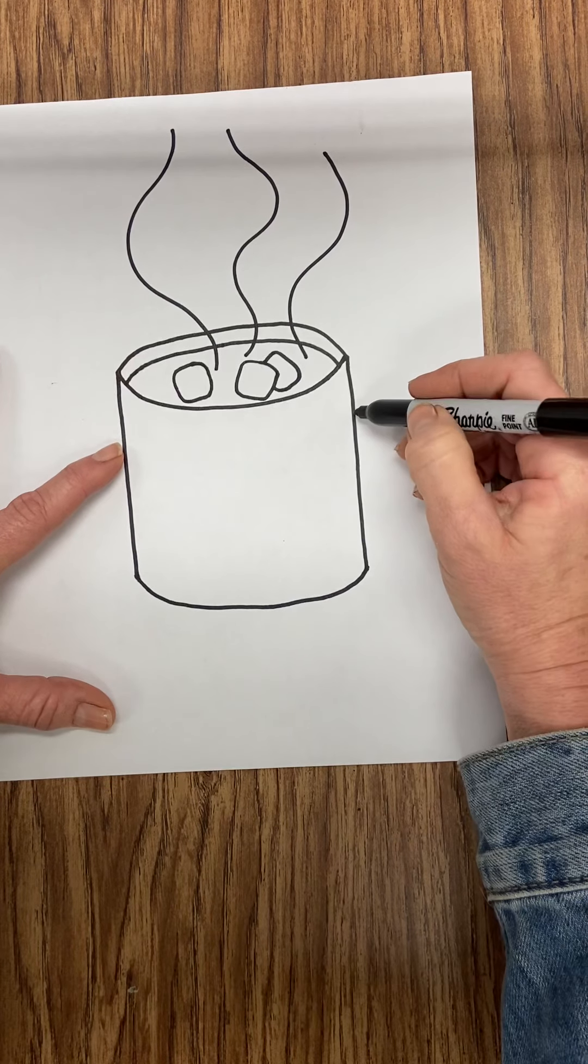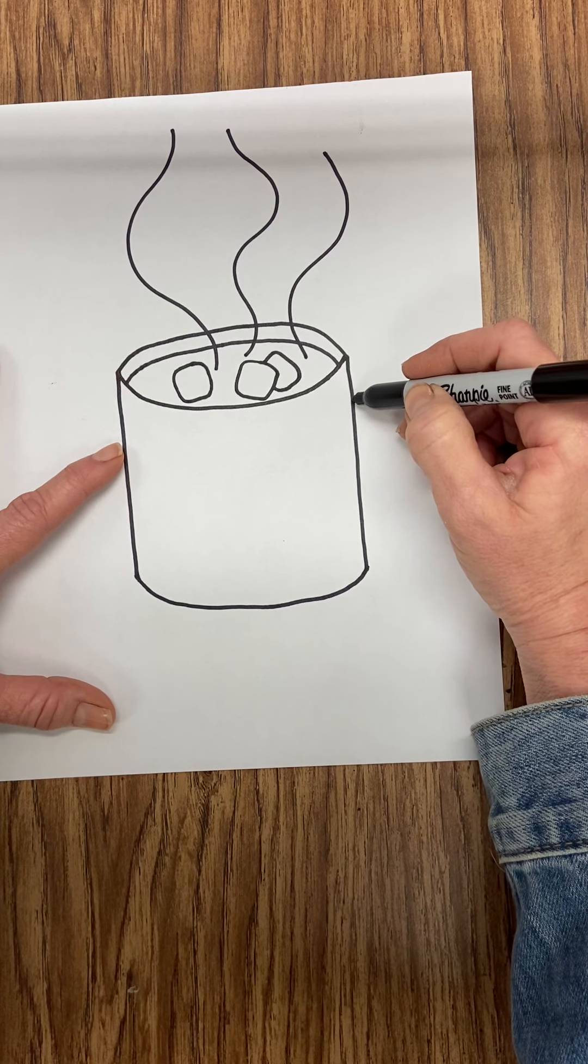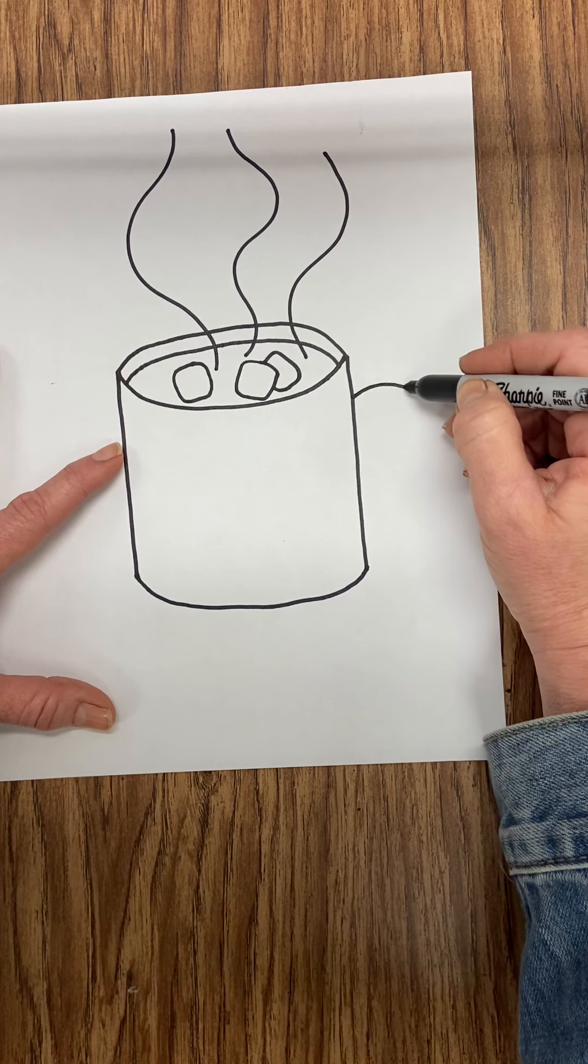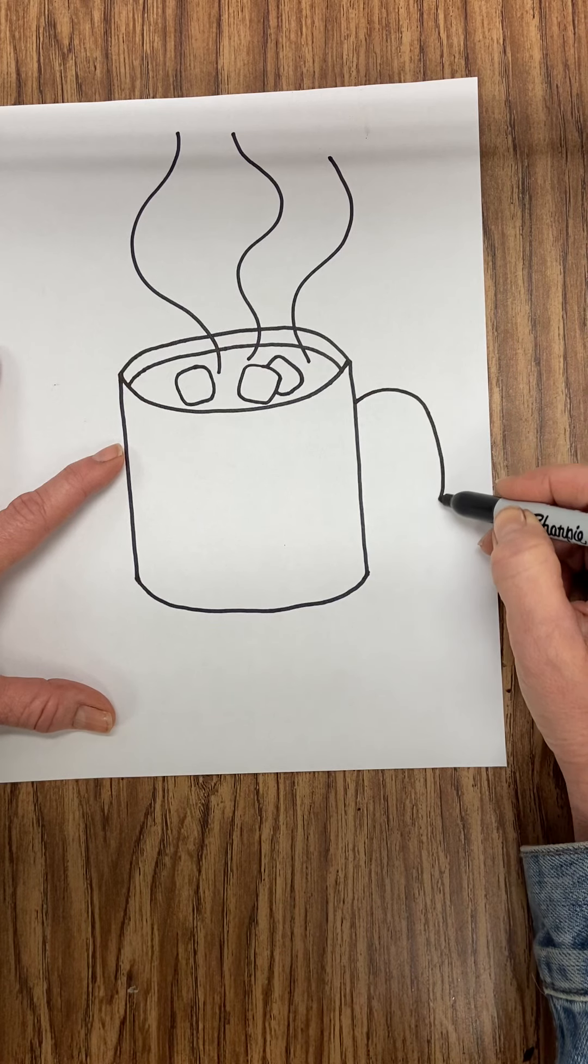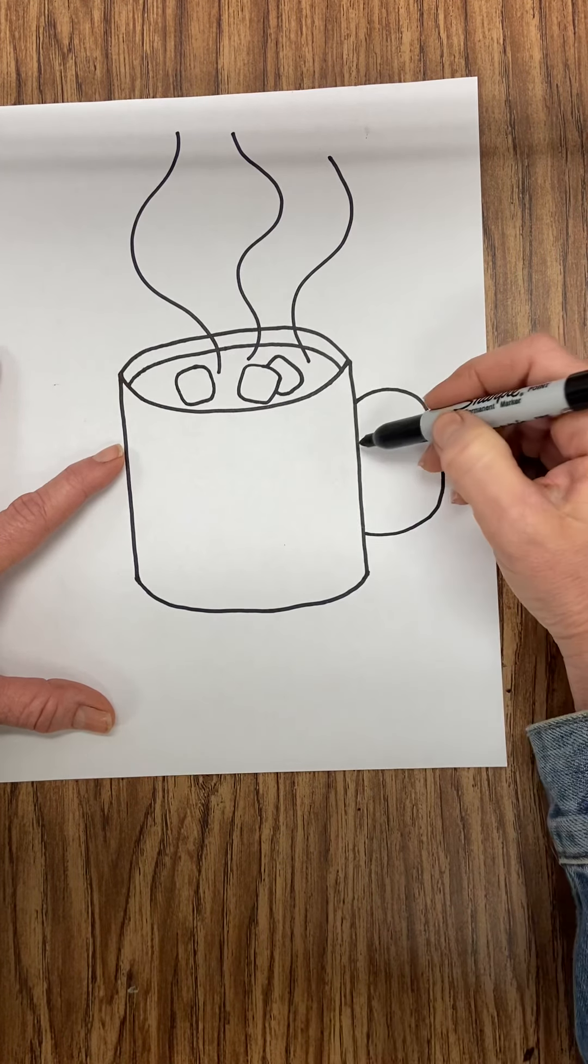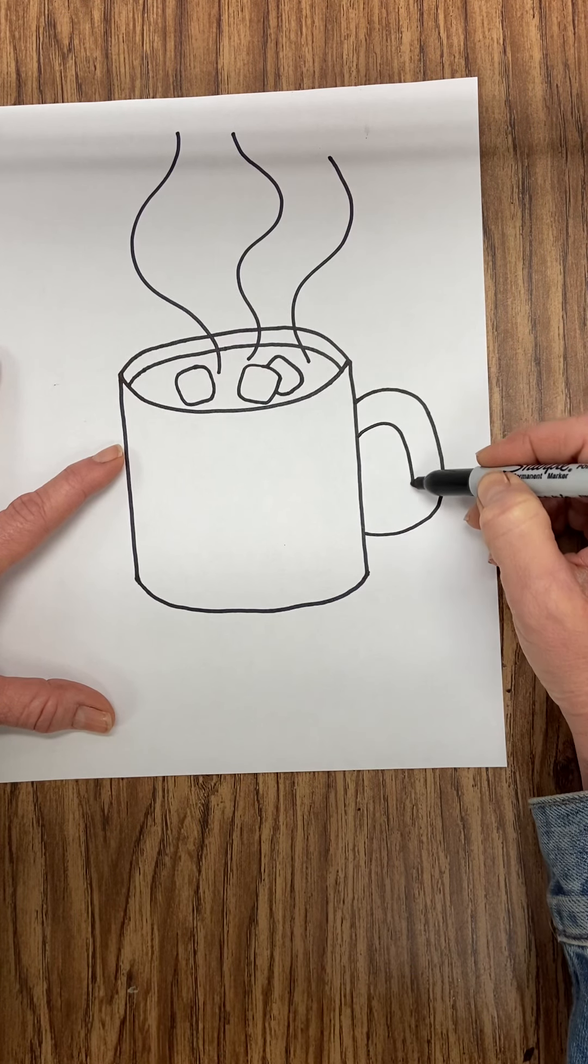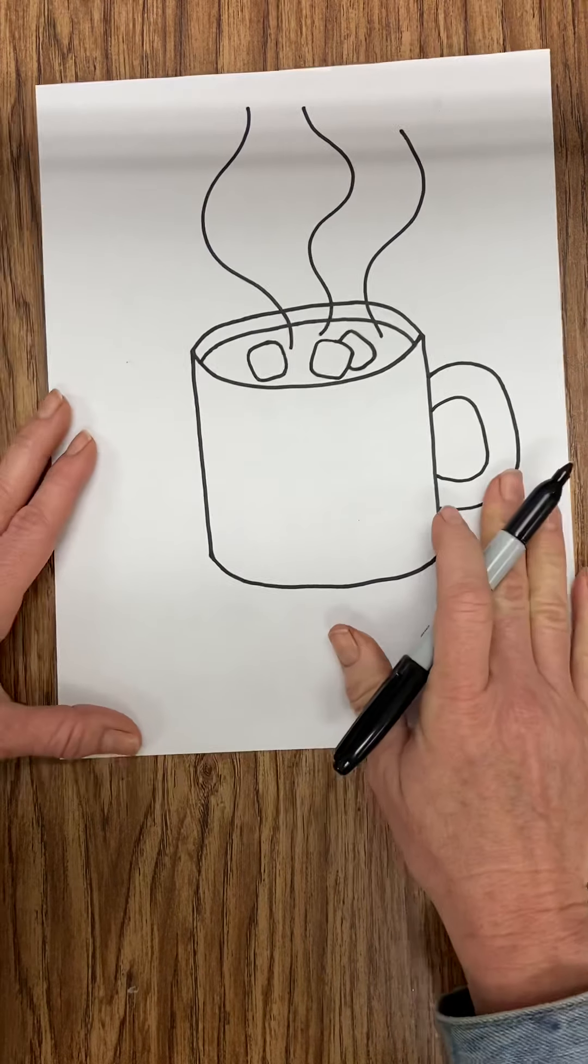And on the side of my mug, I'm going to do my handle. So to do your handle, make sure it's not too small. Over, down, and touch. Kind of like a big ear. And then repeat that inside. Over, down, and touch for my handle.